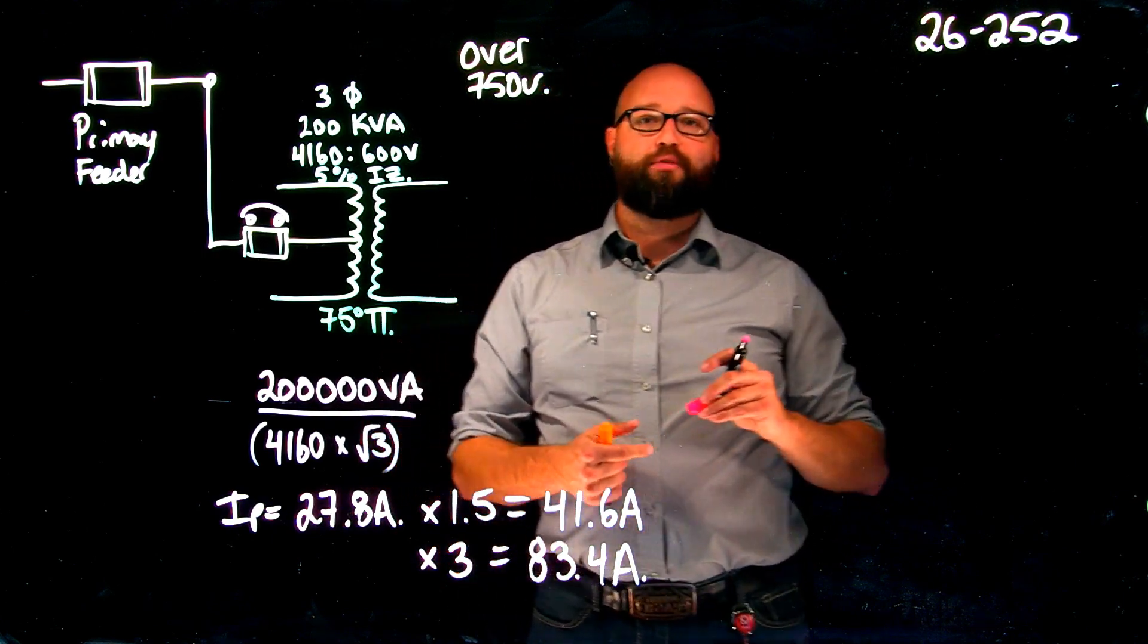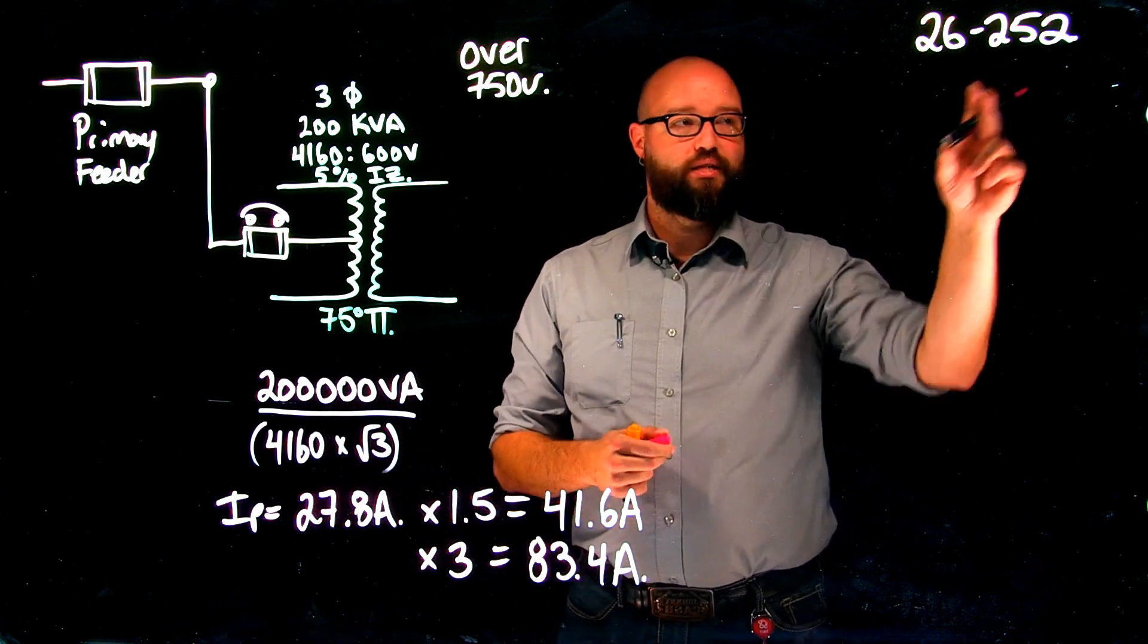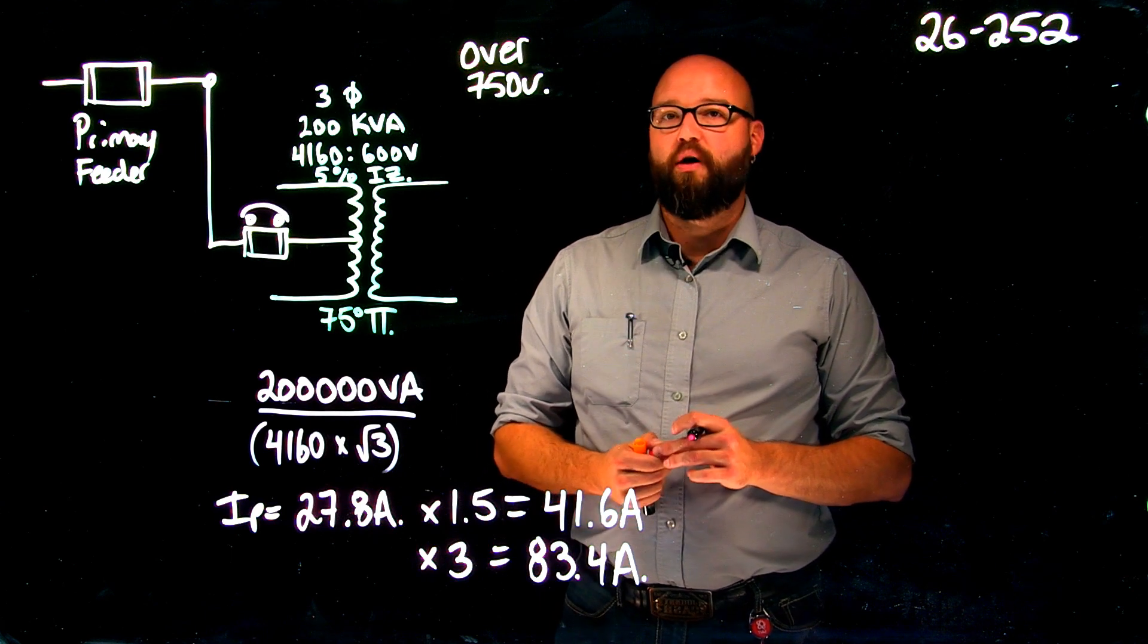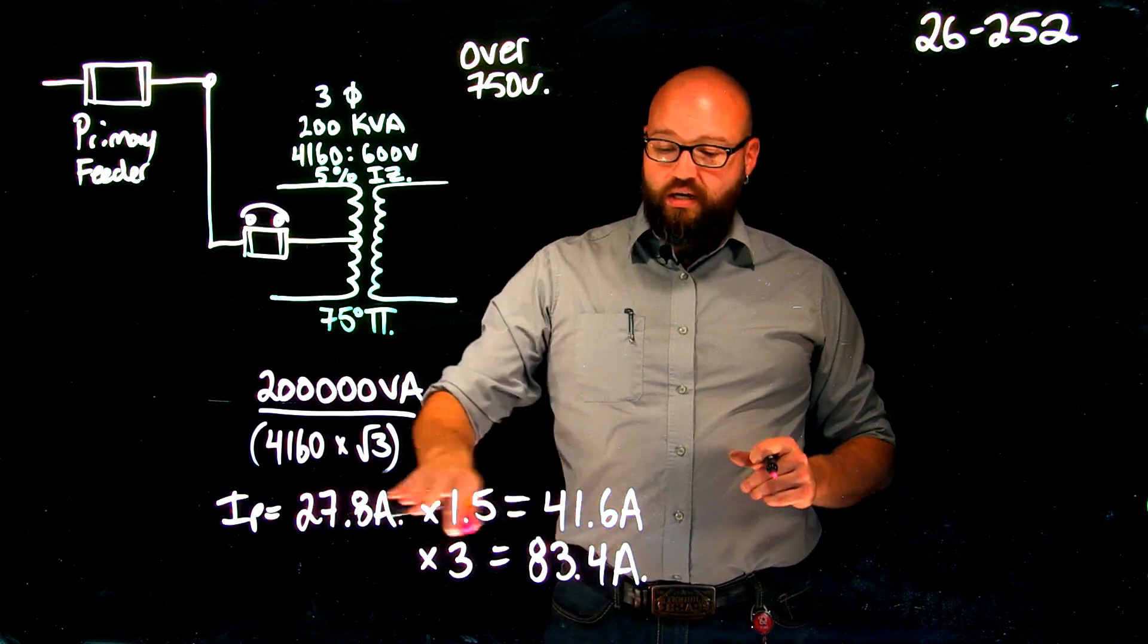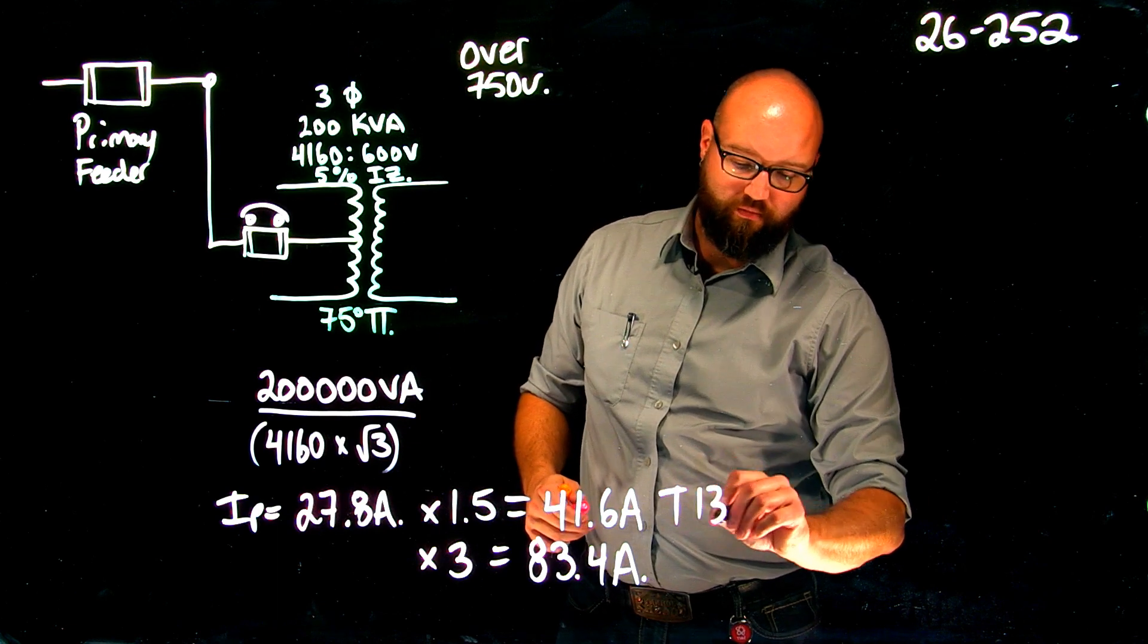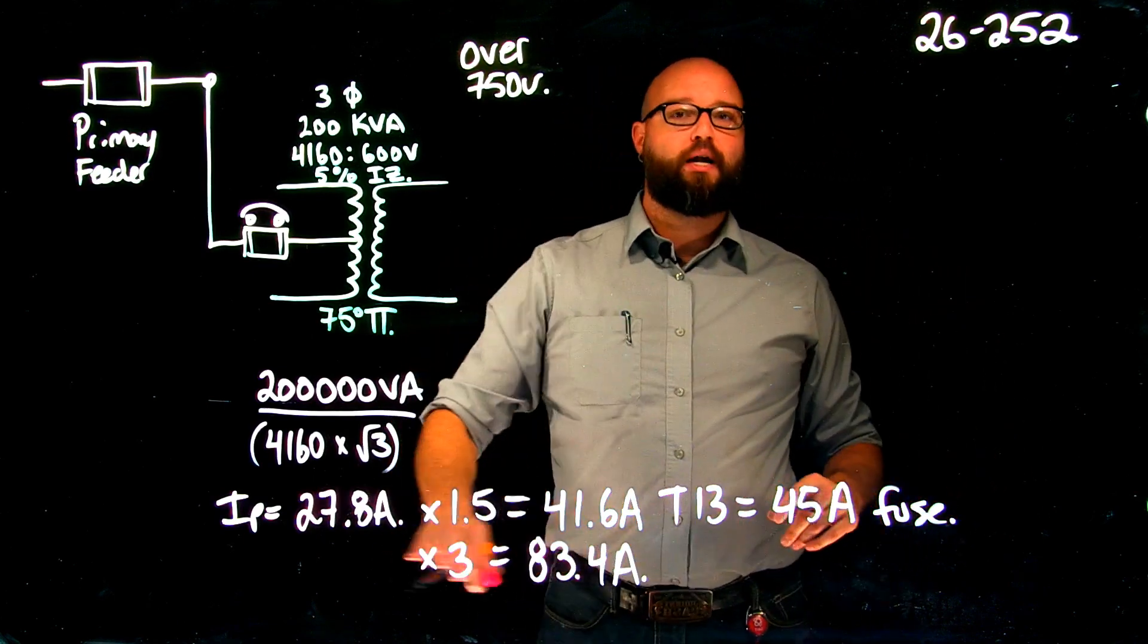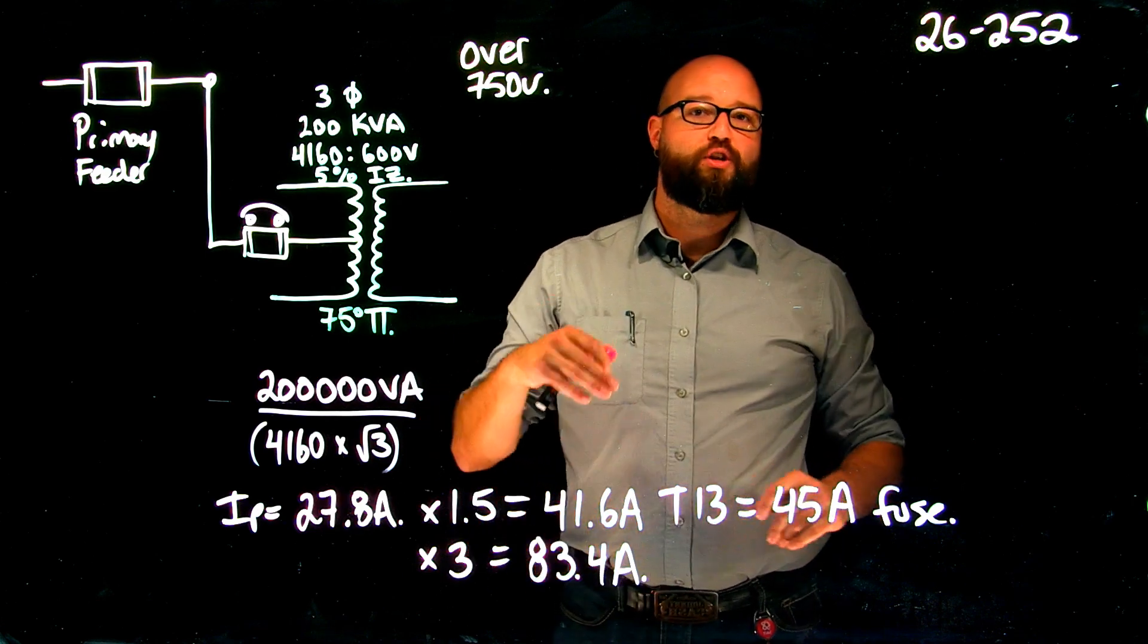This is where we would go to table 13 and select our overcurrent device. However, we need to continue reading on in 26-252 because there is an exception. It tells me that if 150% of rated current does not correspond to a standard fuse rating, we are allowed to go up to the next available size from table 13. So if I end up with 41.6, I'm allowed to go up to a 45 amp fuse, and that is specific to the fuse. There is no exception to the rule when it comes to the breaker.